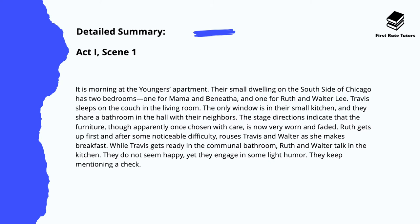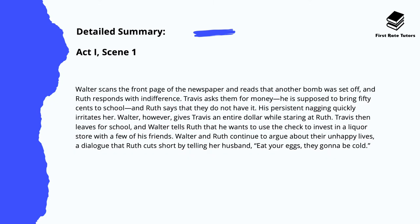Ruth gets up first and, after some noticeable difficulty, rouses Travis and Walter as she makes breakfast. While Travis gets ready in the communal bathroom, Ruth and Walter talk in the kitchen. They don't seem happy, yet they engage in light humour and keep mentioning a cheque. Walter scans the front page of the newspaper and reads that another bomb was set off, and Ruth responds with indifference. Travis then asks them for money — he's supposed to bring 50 cents to school — and Ruth tells him that they don't have it. His persistent nagging quickly irritates her.